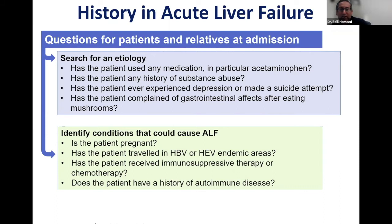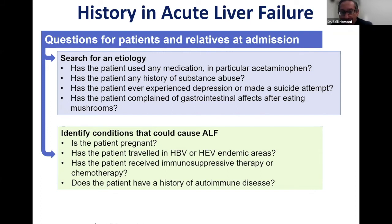Hepatitis E is not endemic in the U.S., so we rarely see those cases unless the patient is immunocompromised. Ask whether the patient has received immunosuppressive therapy or chemotherapy — important for hepatitis B patients who may have had prior exposure. Ask about autoimmune hepatitis — patients can have either history of autoimmune diseases or family history of autoimmune conditions. These are the minimum clinical history questions to help identify the etiology.